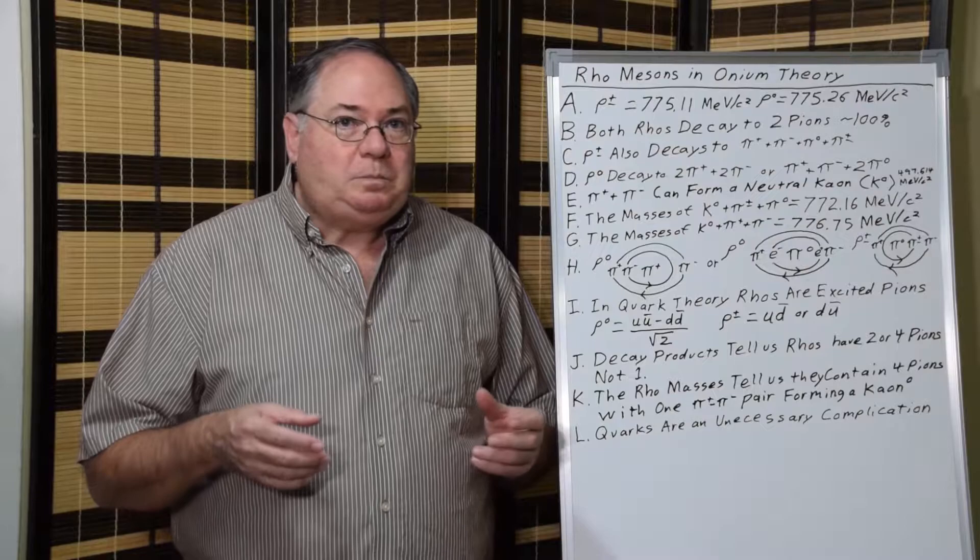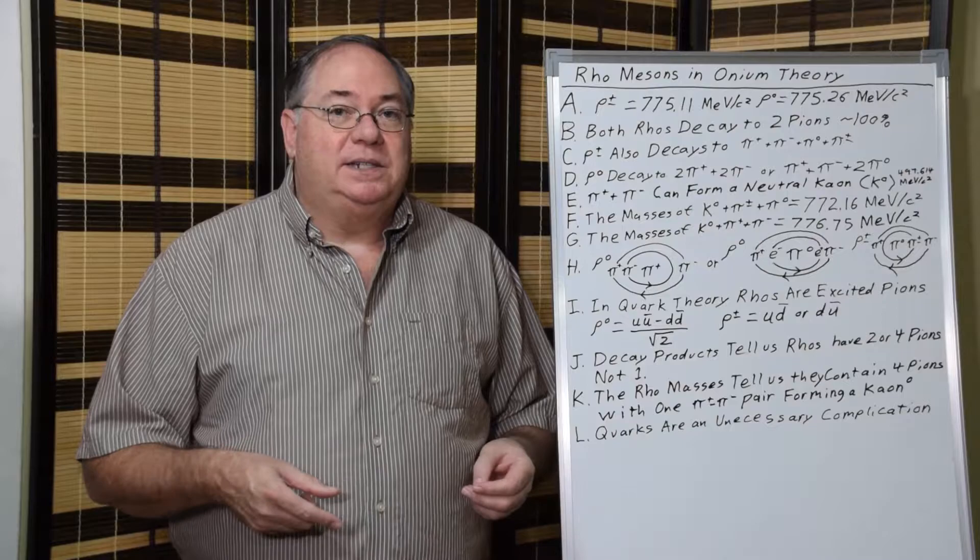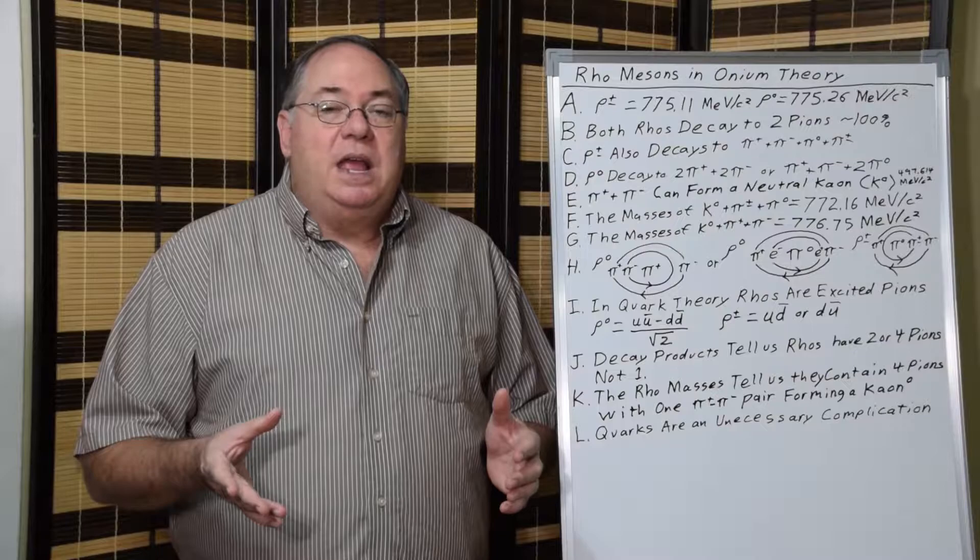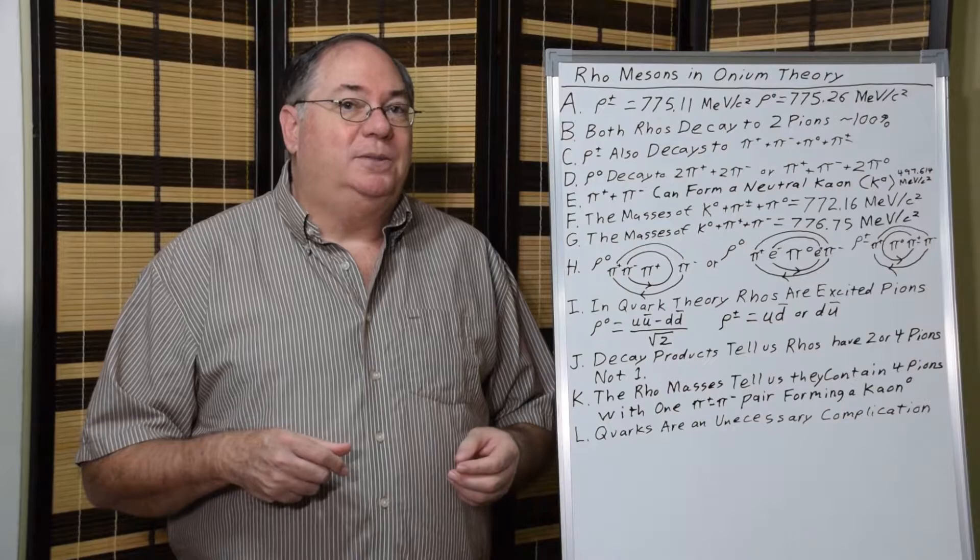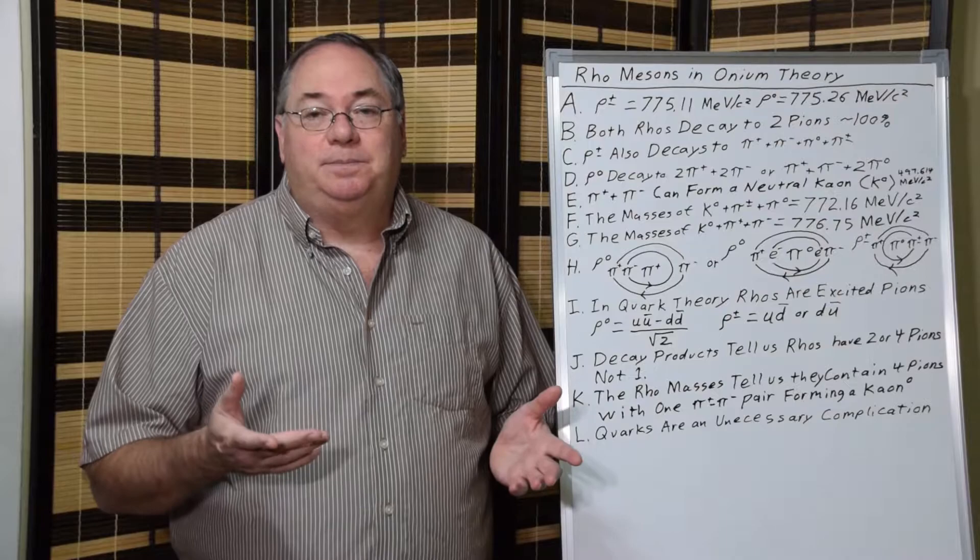Milne and later Feynman and Sternglass found that this relativistic positronium is equal to a neutral pion, and the mass of the neutral pion is entirely relativistic. Using that idea of an Onium model, you can develop an entire particle model that doesn't require quarks. The rho mesons are a great example of how well Onium theory works without needing quarks.